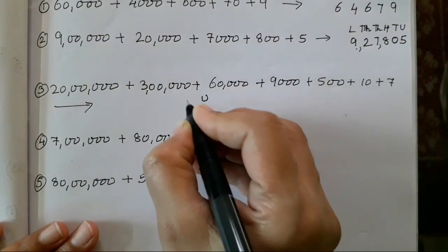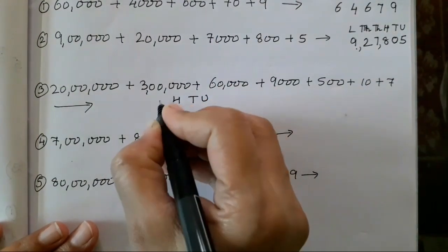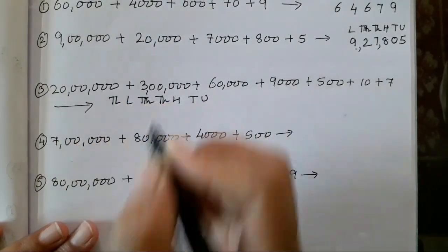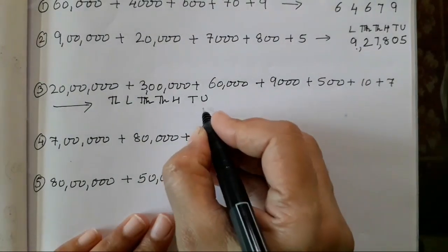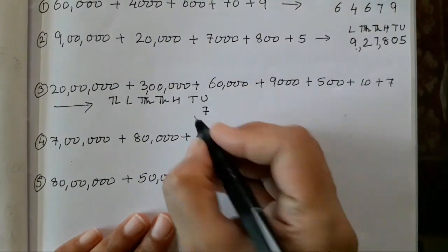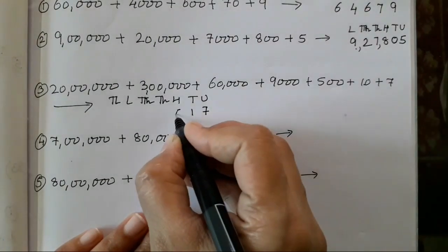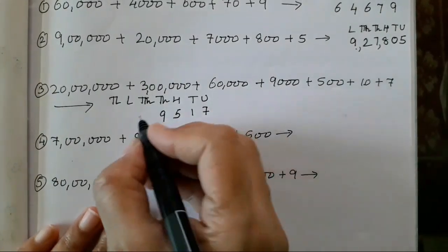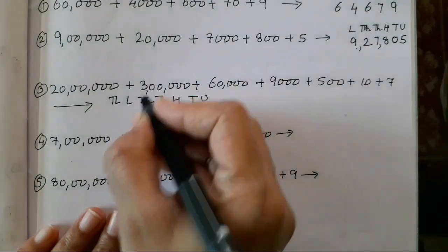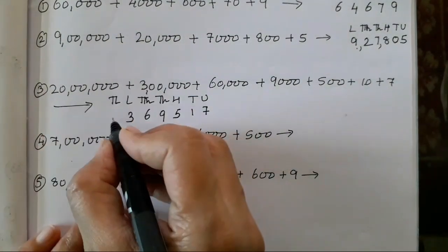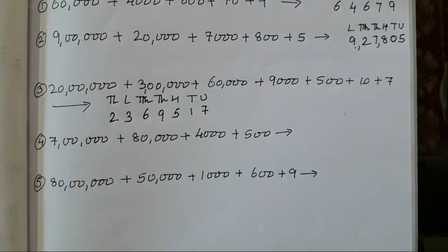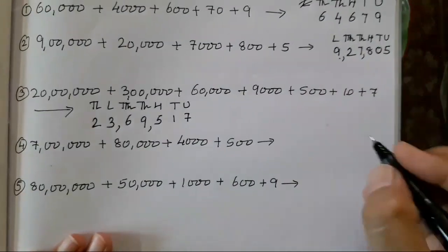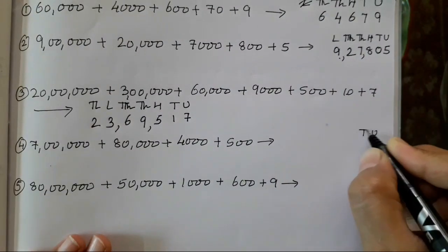Now the next number is going to be very big. Unit, tens, hundred, thousand, ten thousand, lakh, and ten lakhs. So first write seven in units, then ten so one in tens, five hundred so five in hundreds, nine thousand so nine in thousands, sixty thousand so six in ten thousands, three lakhs means three, and twenty lakhs so two comes in ten lakhs. Add your commas, read it, and the answer is going to be right.